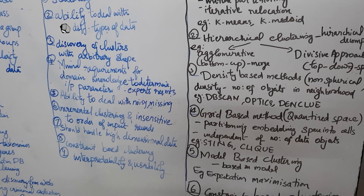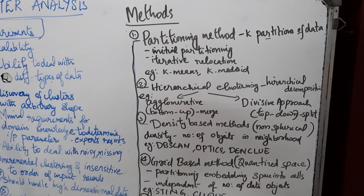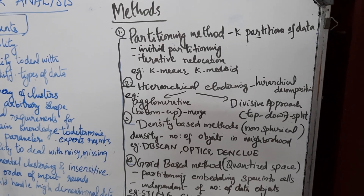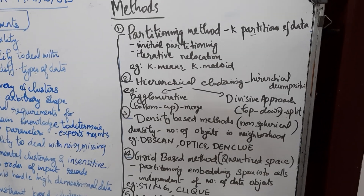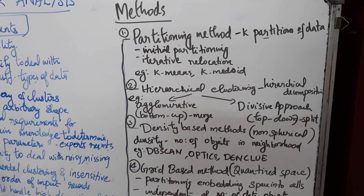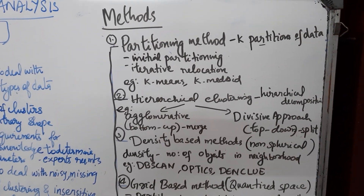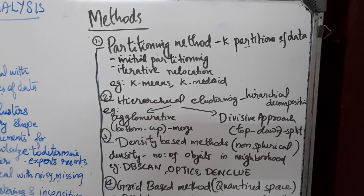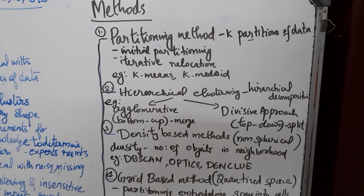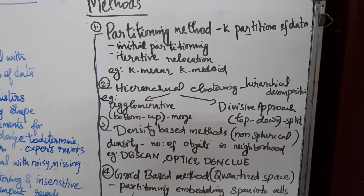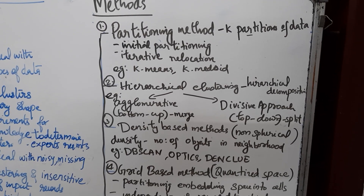We have different clustering methods. The first one is the partition method. Partitioning methods divide the data into different partitions; an initial partition is made, and then iteratively objects are relocated into different clusters. Some examples are k-means partitioning. Then hierarchical clustering, where we hierarchically decompose the data. One famous example is the bottom-up approach, which is called the agglomerative approach — meaning merging.